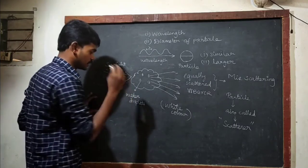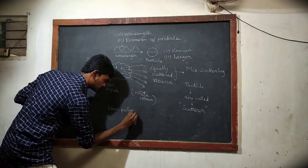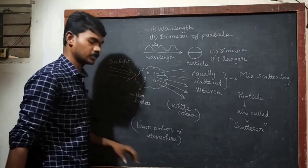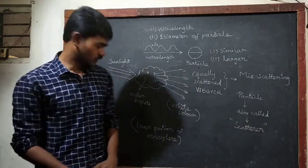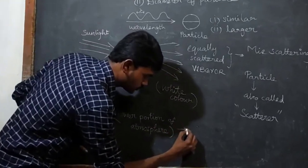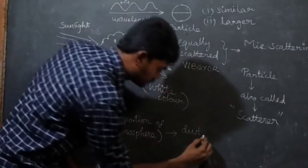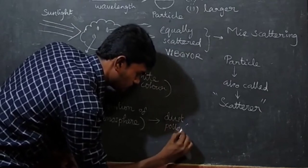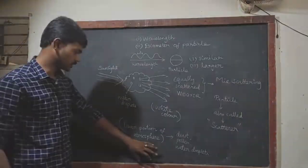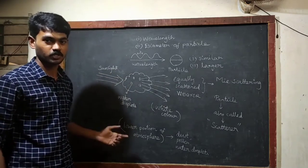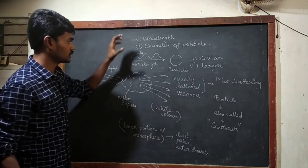Mie scattering occurs when sunlight falls on the lower portion of the atmosphere. In the lower portion of the atmosphere, we have particles like dust particles, pollen, water droplets, and many more. So when sunlight falls on the lower portion of the atmosphere, Mie scattering takes place.